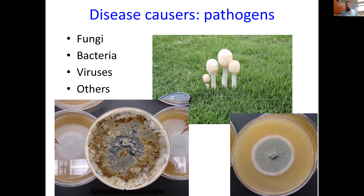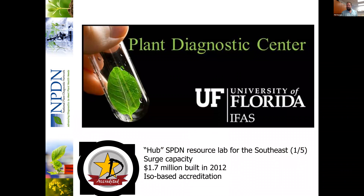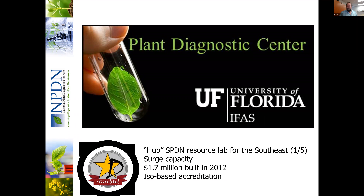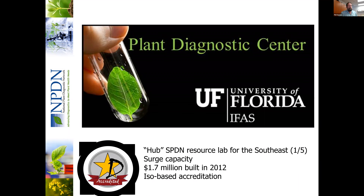It's rarely just one issue causing problems. The short answer to how you know what problem you're dealing with is to send a sample into a diagnostic clinic. There are several diagnostic clinics within the state of Florida within the IFAS system. The one I'm most closely associated with is here in Gainesville — the Plant Diagnostic Center. It's a hub resource for the whole United States, one of five resource labs in the country. We are the Southeast hub lab. The building was put up in 2012, and with the coronavirus pandemic, our doors have been open the whole time.